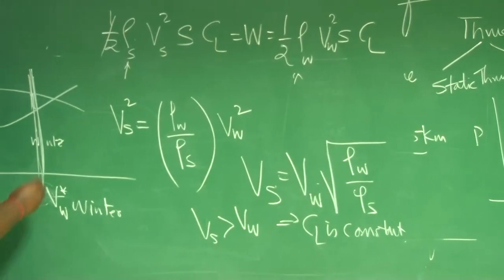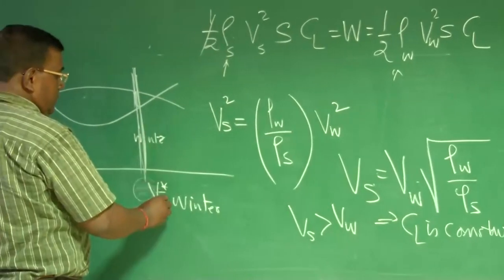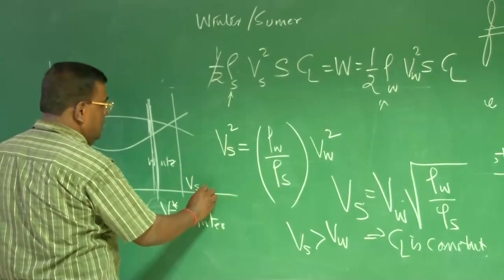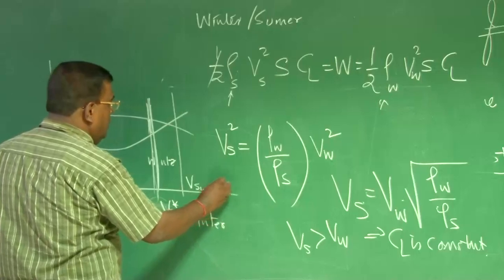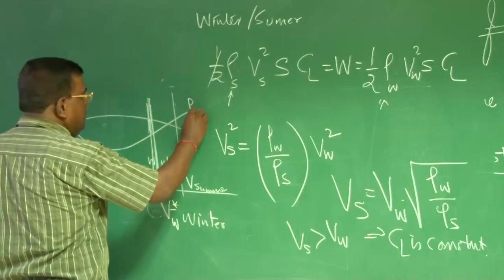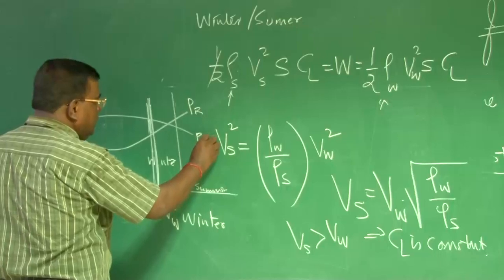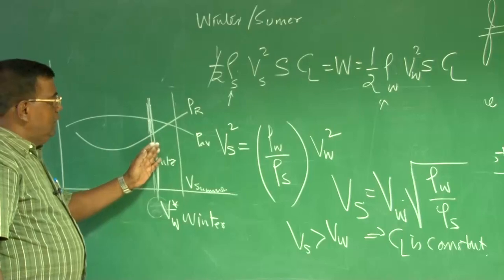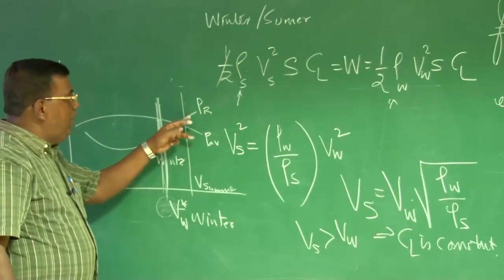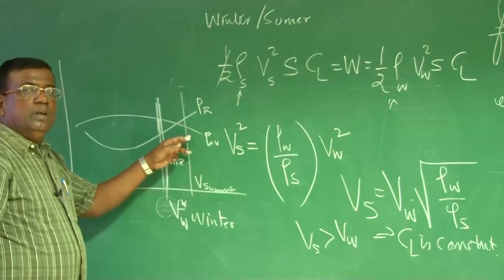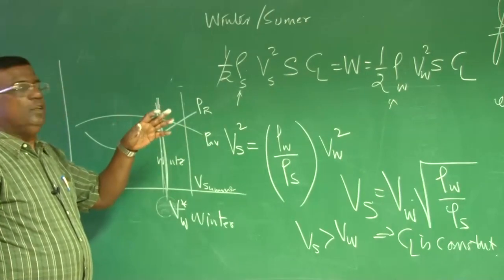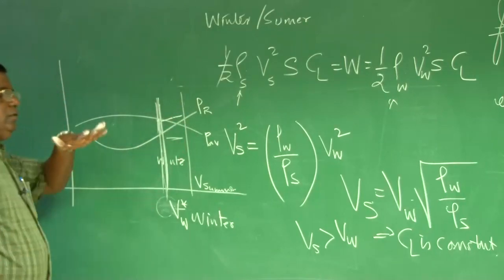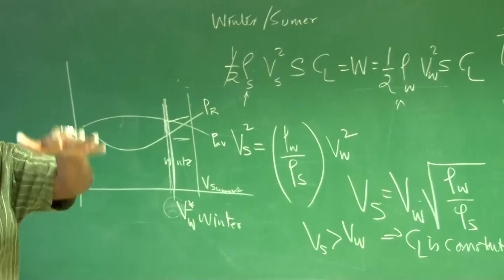And it so happens, it may happen that V summer may come somewhere here. If it comes here, what is happening? This is power required, this is power available. What is happening? The moment that V is here, it is crossing this point, the power required is more than the power available. The machine will start decelerating. And it will start trying to come here, you may exceed by inertia, so there will be oscillation in the UAV, like this. Right?